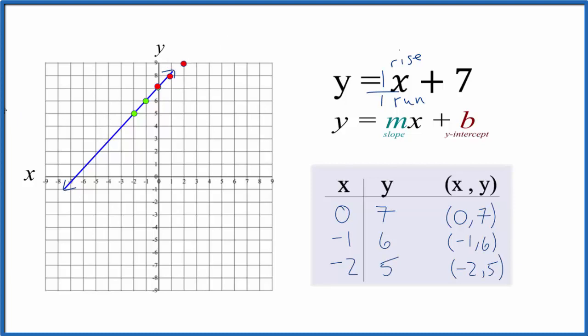This shows us that this is the correct graph for y = x + 7. Note that any value we put in for x would give a corresponding value for y, and that would all fall on this line. This is Dr. B, thanks for watching.